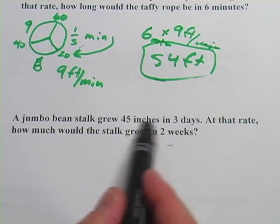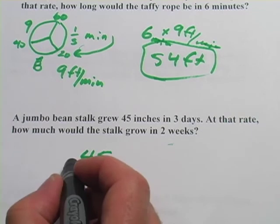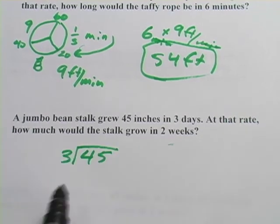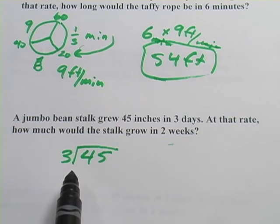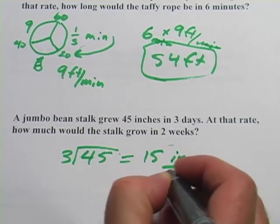So to figure out how much it grows per day, I would take that 45 inches that it grew in three days, and divide it by three, and that would give me the number of inches per day. So 45 divided by three should be 15. So 15 inches per day.